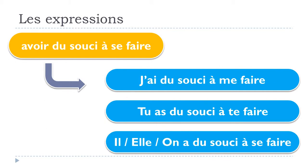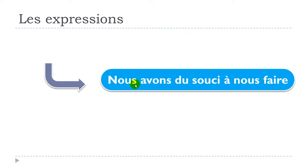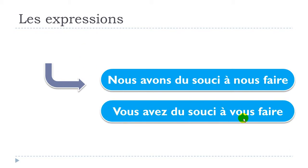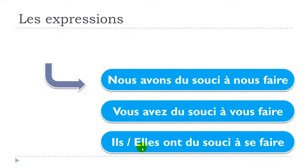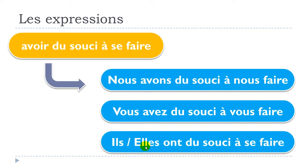Now let's see the plural forms. NOUS: nous avons du souci à nous faire. VOUS: vous avez du souci à vous faire. And then ILS/ELLES at the plural: ont du souci à SE faire. So keep in mind: NOUS for the first person plural, VOUS for the second, and SE for the third.